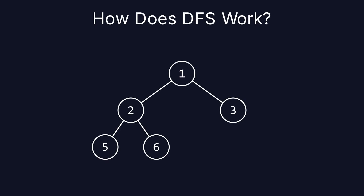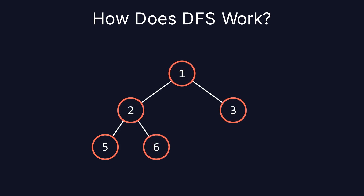DFS starts at the root node and explores as far as possible along each branch before backtracking. In this tree, DFS would visit node 1, then go to node 2, move down to 5 and 6 before backtracking to 2, then moving to 3. This method explores depth first, ensuring all descendants of a node are fully explored before moving to the next sibling.